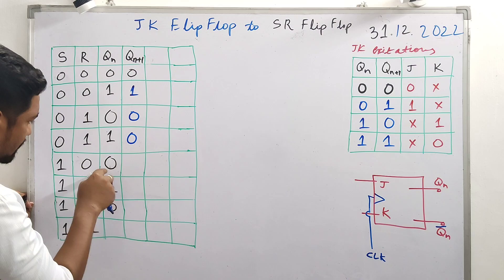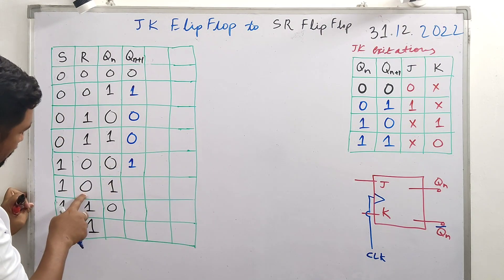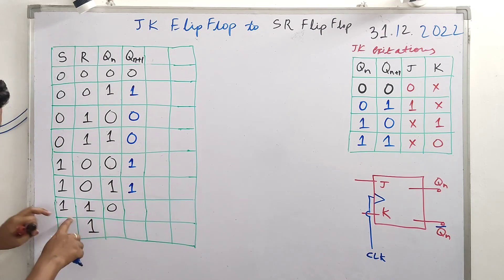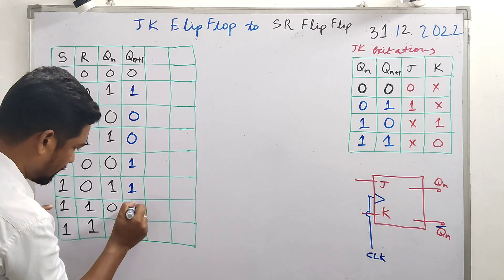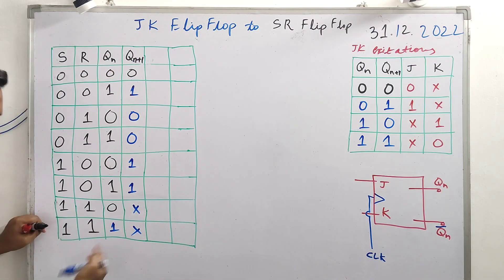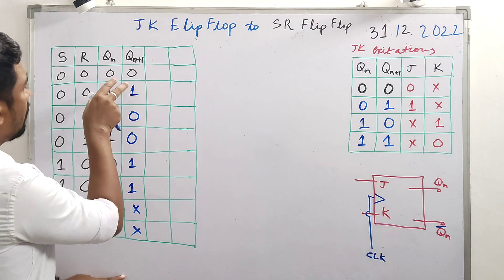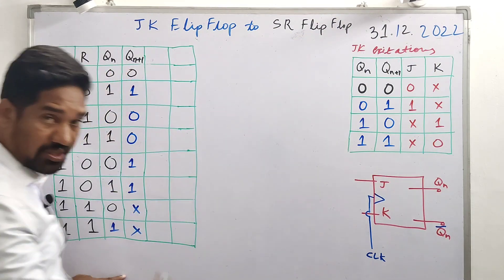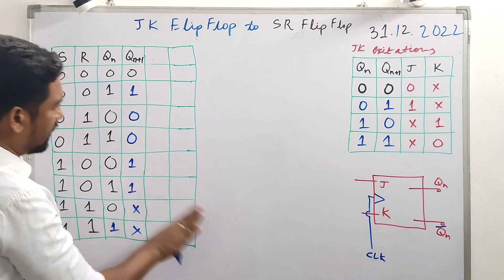Continuing the SR truth table: present state 0, next state 0 gives Q(n+1) = 0. Present state 0, next state 1 is set state, output is 1. Present state 1, next state 1: set state, continues. For 1-1 in SR flip-flop it is invalid - don't care. The 1-1 combination cannot be predicted, so it's invalid/don't care.